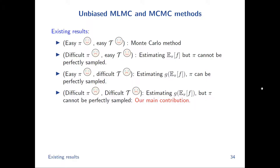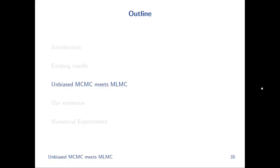Our contribution is the fourth and most challenging case: estimating G(E_pi[f]) where pi cannot be directly sampled and must be approximately sampled by a Markov chain Monte Carlo algorithm. This differs from the standard assumption in operations research. The main contribution of this work is combining multilevel Monte Carlo and unbiased MCMC to handle this setting. I'll pause here to see if there are any questions about the problem setup.